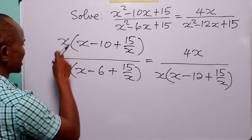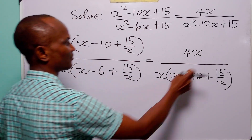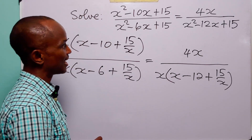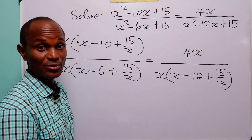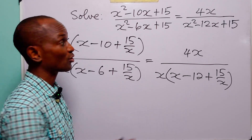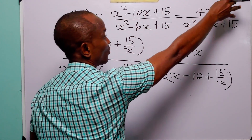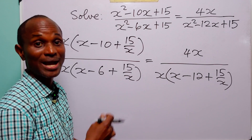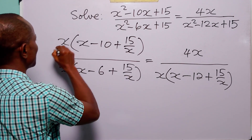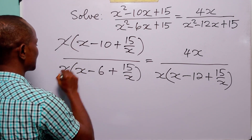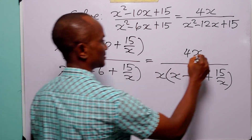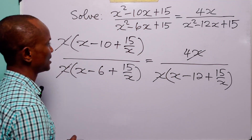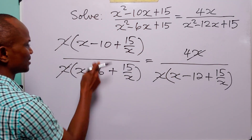Now you can see that we have a common factor, which is x. And since x equal to zero is not a root of any of the original equations, we can comfortably divide through by x. So this takes care of that, and this takes care of that, leaving us with these.